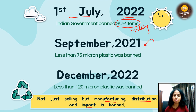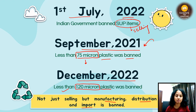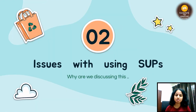Before that, in September 2021, there was already a ban on plastic below 75 microns thickness. Then in December 2022, or you can say January 1st, 2023, there was a ban on plastic below 120 microns. Now we've talked about single-use plastic and the bans around the world — let's see why the ban was needed.